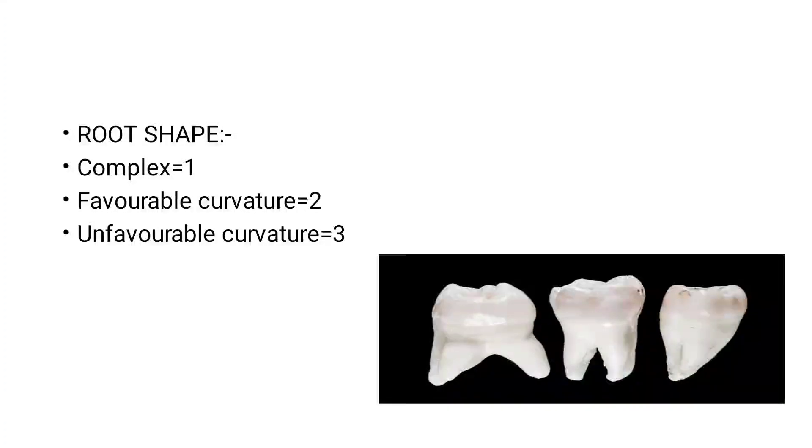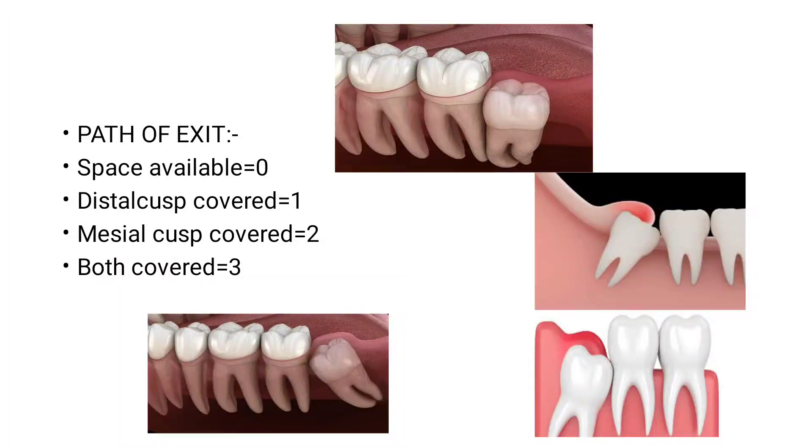Root shape also determines our difficulty index. If there is a complex root, it is scored one; favorable curvature scored two; unfavorable curvature scored three. The follicle size of the impacted third molar also describes our difficulty index. If there is a normal follicle size it is scored zero, possibly enlarged scored one, and enlarged scored two as it is harder to extract.